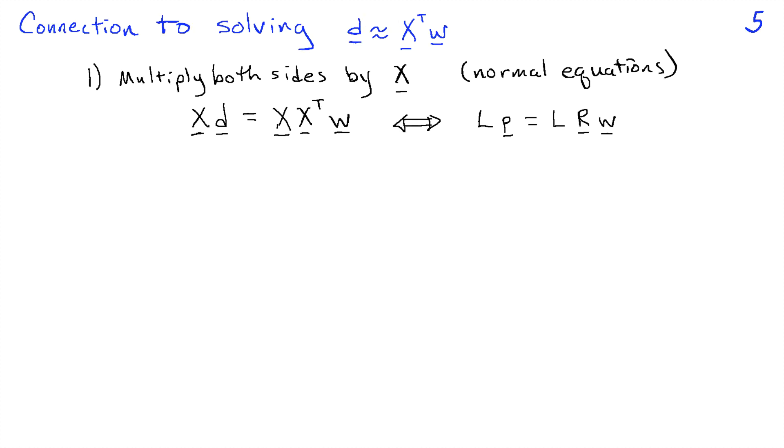Now, before we conclude, we're going to make a couple connections to the least squares problem, the vector D being approximated as a matrix X transpose times W. Now, if you were presented with this problem in a linear algebra class, the classic approach to solving this is to multiply both sides of this equation by the matrix X and form the so-called normal equations, which are XD equals X X transpose times W. Now, this, on the left-hand side, XD, is just L times the vector P, whereas X X transpose is just L times the matrix R.